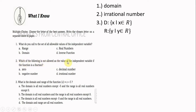Number two: which of the following is not allowed as the value of the independent variable? If the function is a fraction, number two is irrational. Number three: what is the domain and range of the function f(x) = x − 5? The domain and range, because this is a linear function, is the set of real numbers.